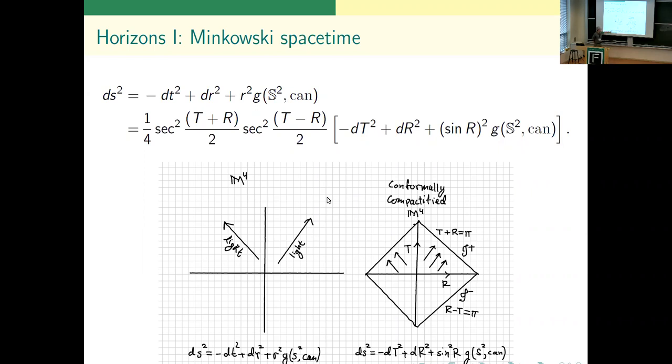The terminology: script i indicates infinity and it's generally pronounced scri. Scri minus for past null infinity, scri plus for future null infinity. The Minkowski metric gets transformed by this change of variables. The spatial part now is basically the metric on a three sphere, and that tells you that this thing out here, which looks like a large circle, is actually one pole of a sphere - it's just a point.